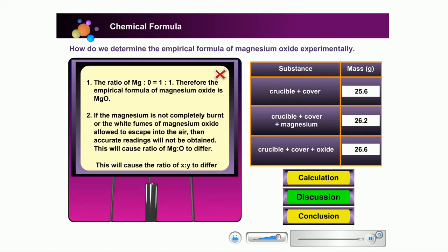The ratio of magnesium to oxygen is 1 to 1. Therefore, the empirical formula of magnesium oxide is MgO.